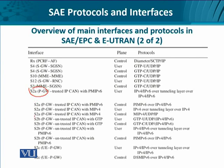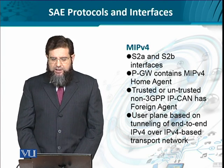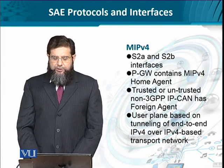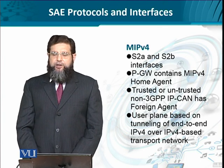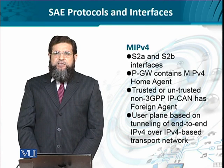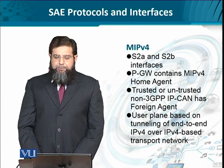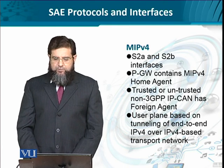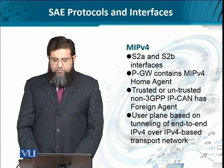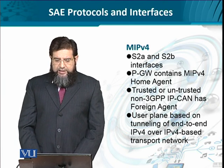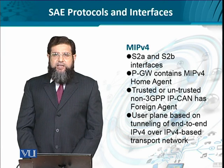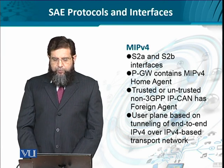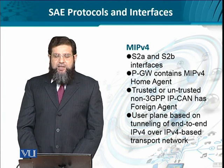Then we have S2B interfaces, which are also worth our interest, and S2C interfaces both in the control and user planes. For implementing the mobile IP version 4 scenario, S2A and S2B interfaces are defined. In this case, the Packet Gateway contains the home agent, and likewise the trusted or untrusted IP CANs contain their foreign agents, because the user equipment moves within these IP CANs.